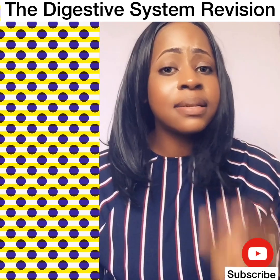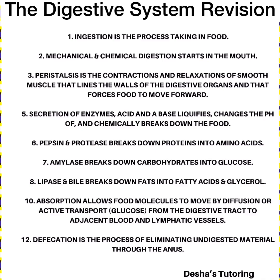Let's recap the major points of the digestive system. Ingestion is the process by which we take in food. Mechanical and chemical digestion both start in the mouth. Peristalsis is the contraction and relaxation of smooth muscle lining the walls of the digestive organs, forcing food to move forward. Secretion of enzymes, acid, and a base liquefies, changes the pH of, and chemically breaks down the food. The acid was hydrochloric acid, the base was sodium bicarbonate, pepsin and protease break down proteins into amino acids, and amylase breaks down carbohydrates into glucose.